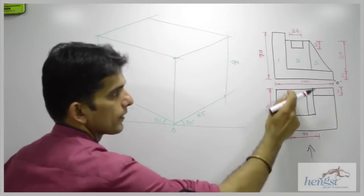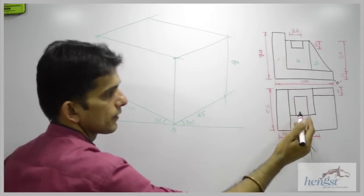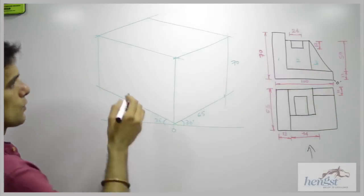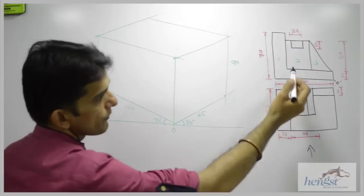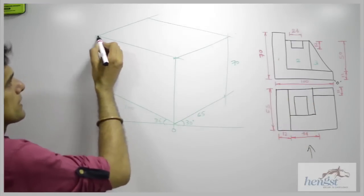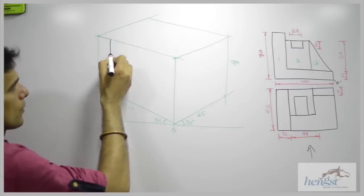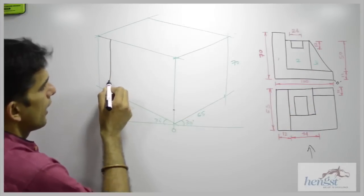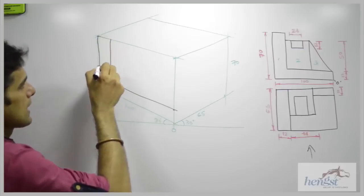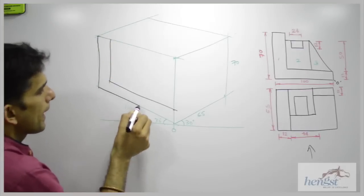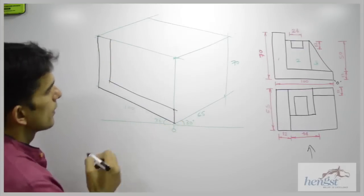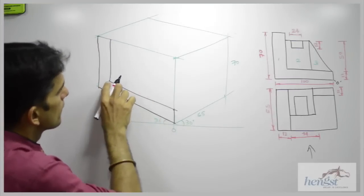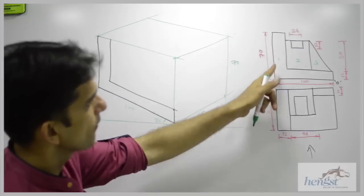This is part 2 and this is part 3. First we will draw part 1. Looking at the dimensions, this is 12, so we will take 12 from here, then go down straight. This side is also 12, we will take 12 from here, then draw a line. All these lines will be parallel to 30 degrees, so we can do it with a set square. We are done with part 1.